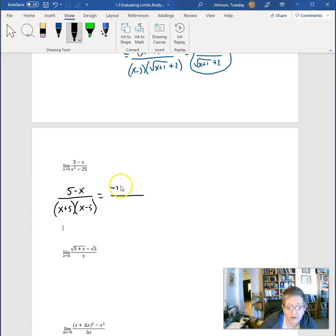See, x minus 5 is not the same as 5 minus x. But if I factor out a negative 1, I can reverse the order of subtraction. Take out the negative 1 and it reverses the order of subtraction. Now we can cancel our x minus 5 and get negative 1 over x plus 5.